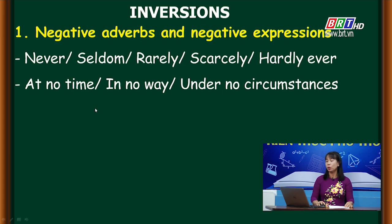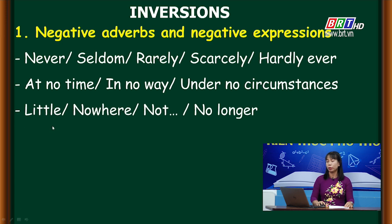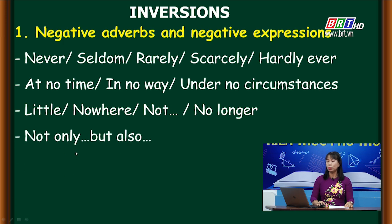Tiếp theo: 'at no time' (không bao giờ), 'in no way' (không đời nào), 'under no circumstances' (dù trong bất kỳ hoàn cảnh nào cũng không). Và còn có 'little', 'nowhere', 'not', 'no longer' — tất cả đều là những từ chỉ sự phủ định. Cuối cùng là cấu trúc 'not only ... but also'.